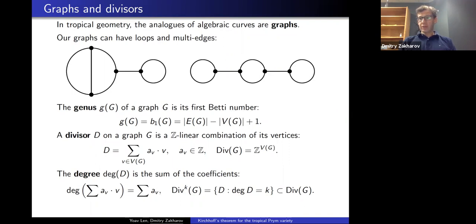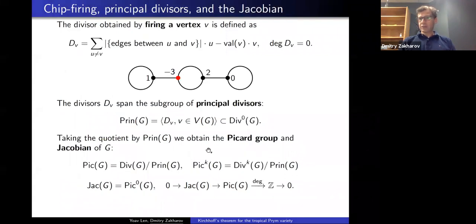One of the starting points for tropical algebraic geometry was the realization — first in the combinatorics community and then taken up by algebraic geometers — that divisor theory on graphs behaves in a remarkably similar way to divisor theory on a Riemann surface. There's a Riemann–Roch theorem and so on. Linear equivalence for divisors on a graph is generated by what's called a chip firing operation, which is a kind of elementary principal divisor. You fix a vertex on your graph.